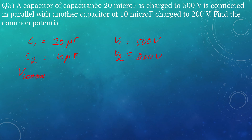V common equals C1 V1 plus C2 V2, divided by C1 plus C2.